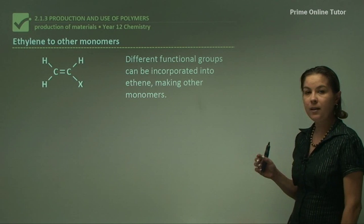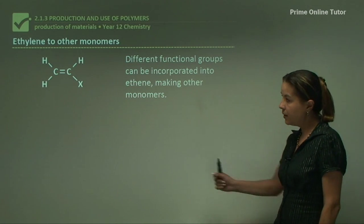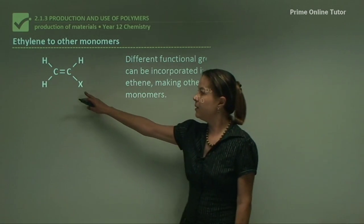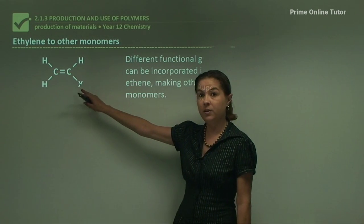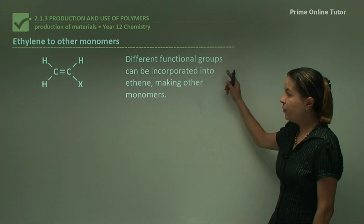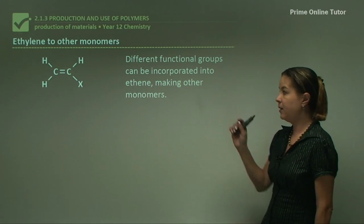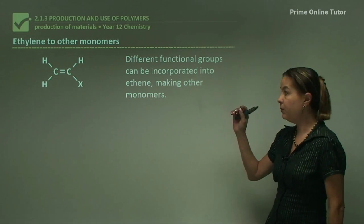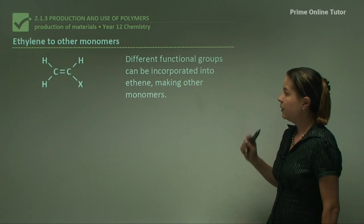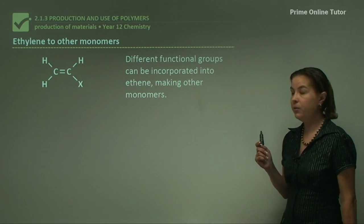Ethylene can be made into different monomers. In ethylene, this X group is a hydrogen, but different functional groups can be incorporated into that backbone, into ethene, making other monomers.